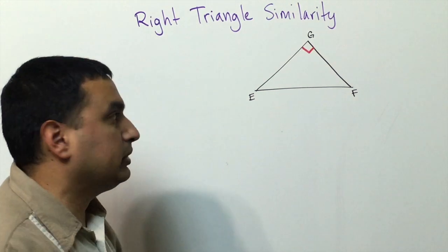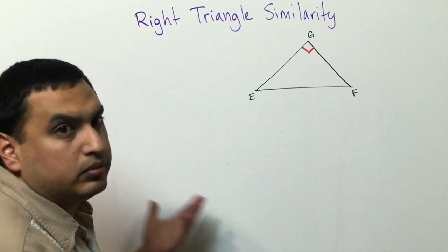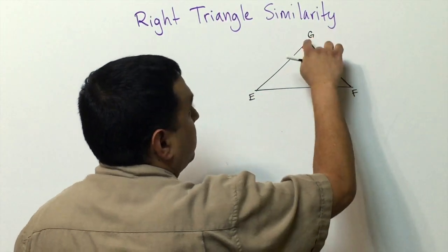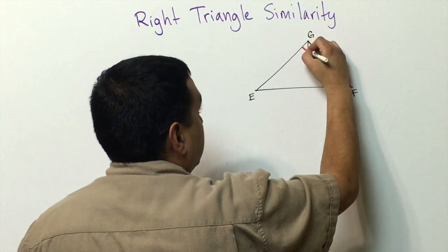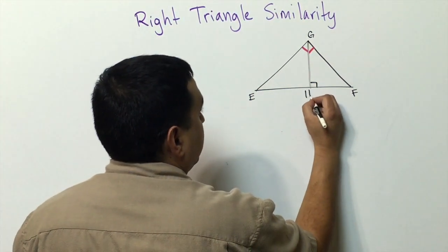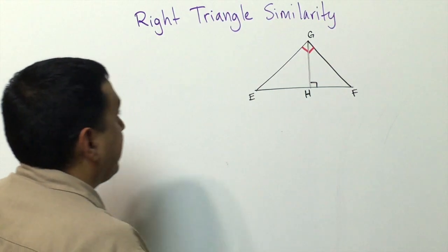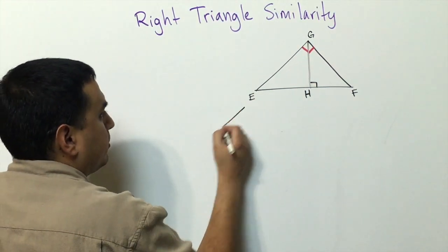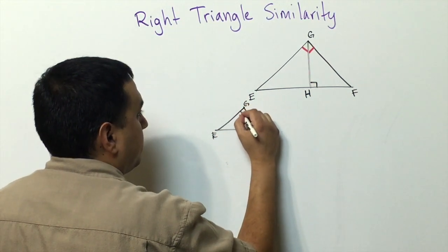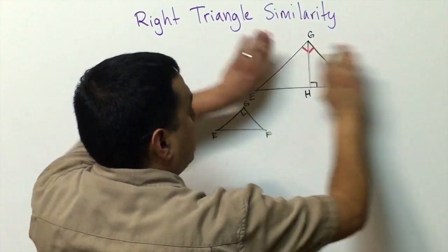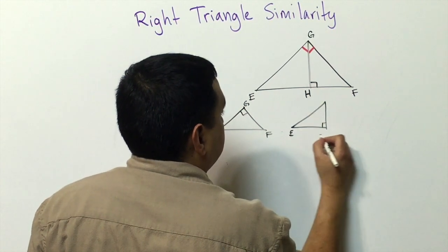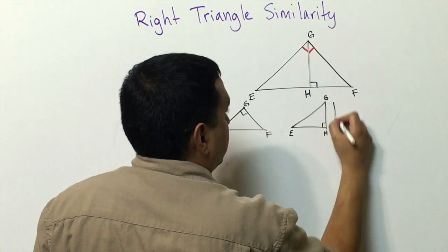This lesson deals with right triangle similarity. If I take the point opposite the hypotenuse and draw a line straight down so that it's perpendicular, what happens is I form three similar triangles. The first one is the original triangle with vertices E, F, and G. Then this line splits it into two different smaller triangles.